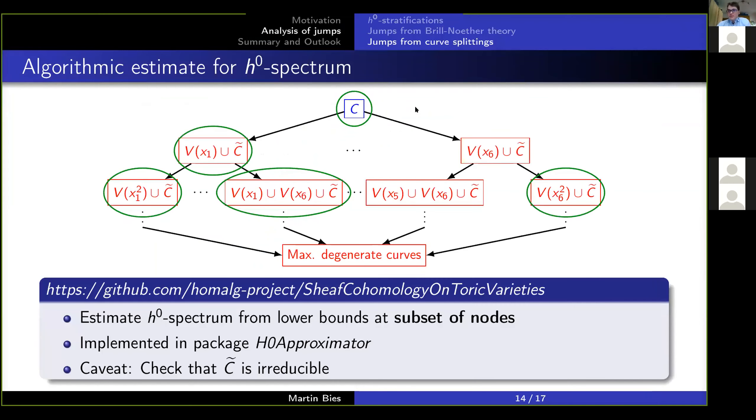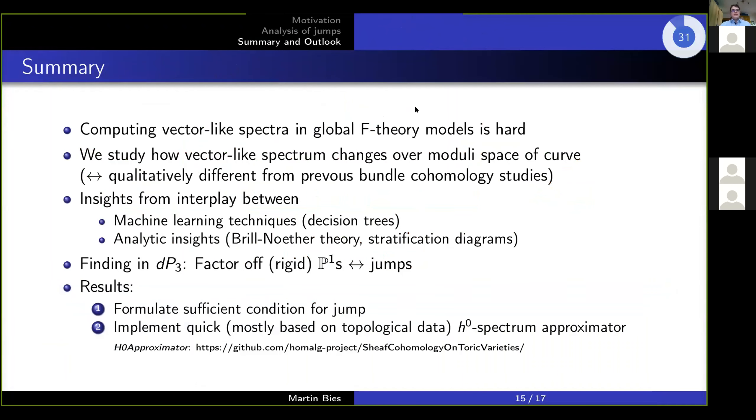Okay. So that's what I wanted to say. Now let me wrap this up. So what I tried to convince you is, first of all, computing vector-like spectra in F-theory is typically hard. Two, what we did is we studied how this vector-like spectrum changes when we scan it over the complex structure moduli of the curve, which is qualitatively different than what has been previously done. Our approach is twofold. We have both machine learning aspects that lead us forward as well as the analytic insights. And they turned out to be quite a fruitful interplay.